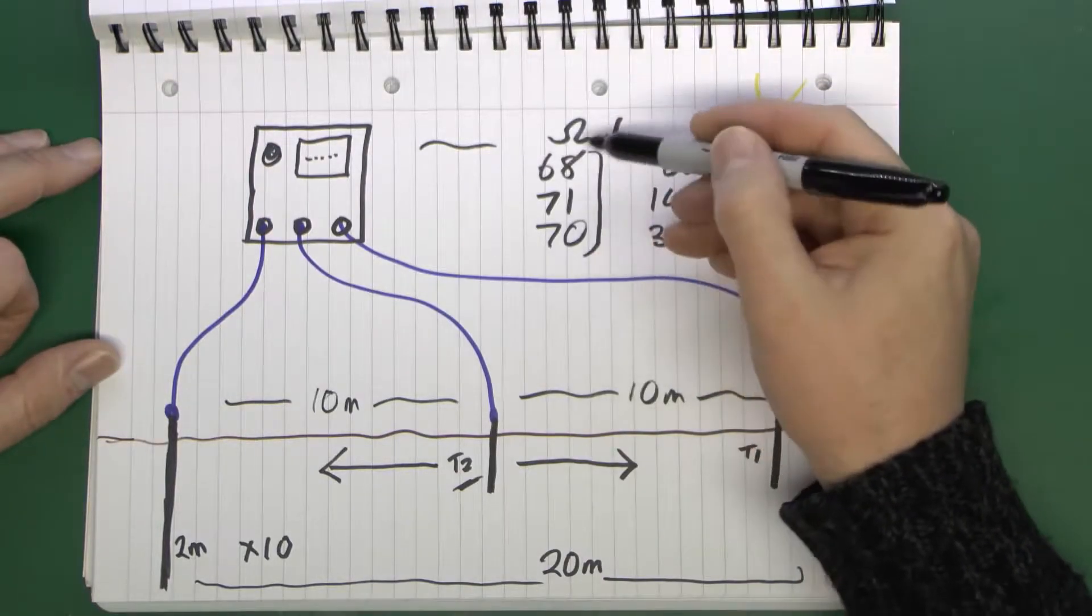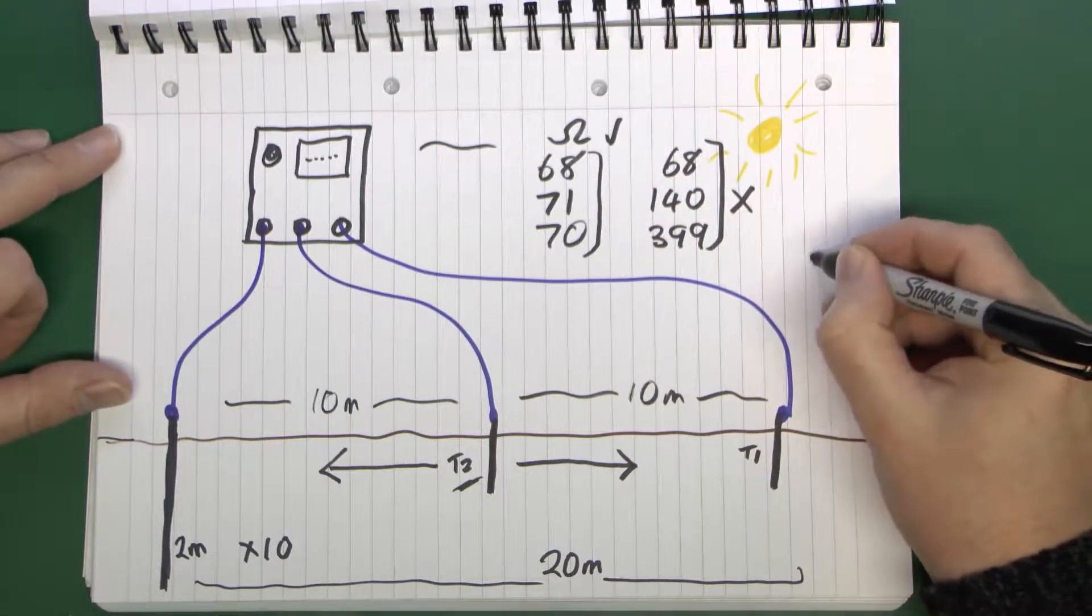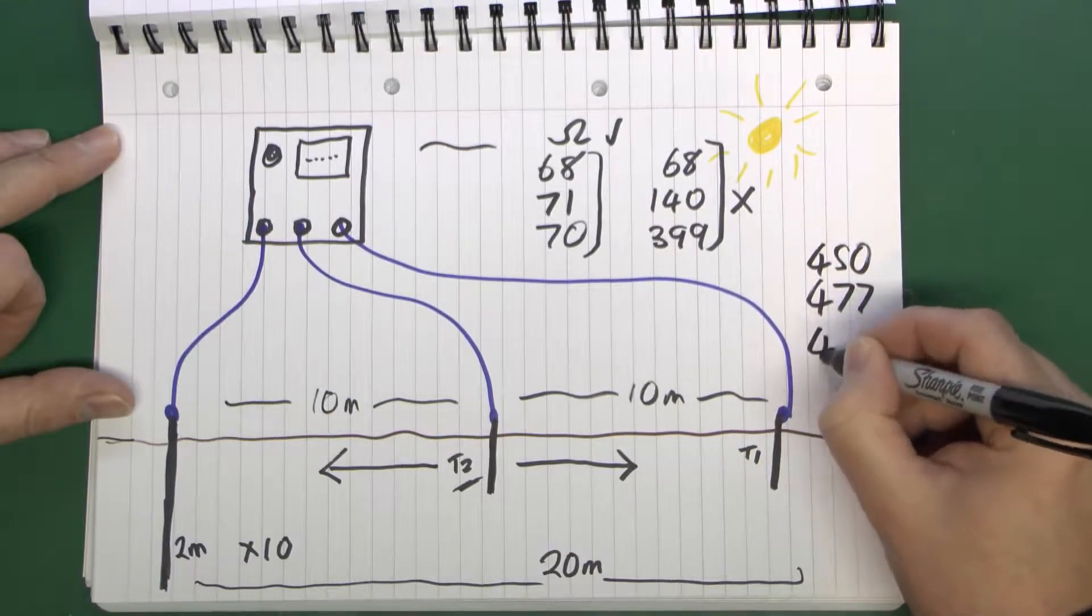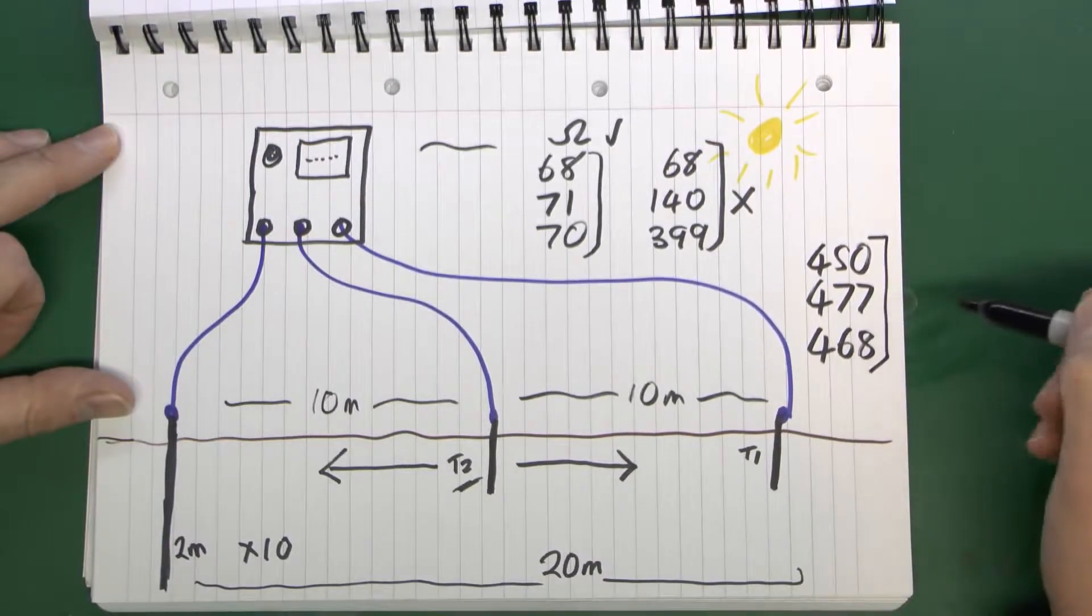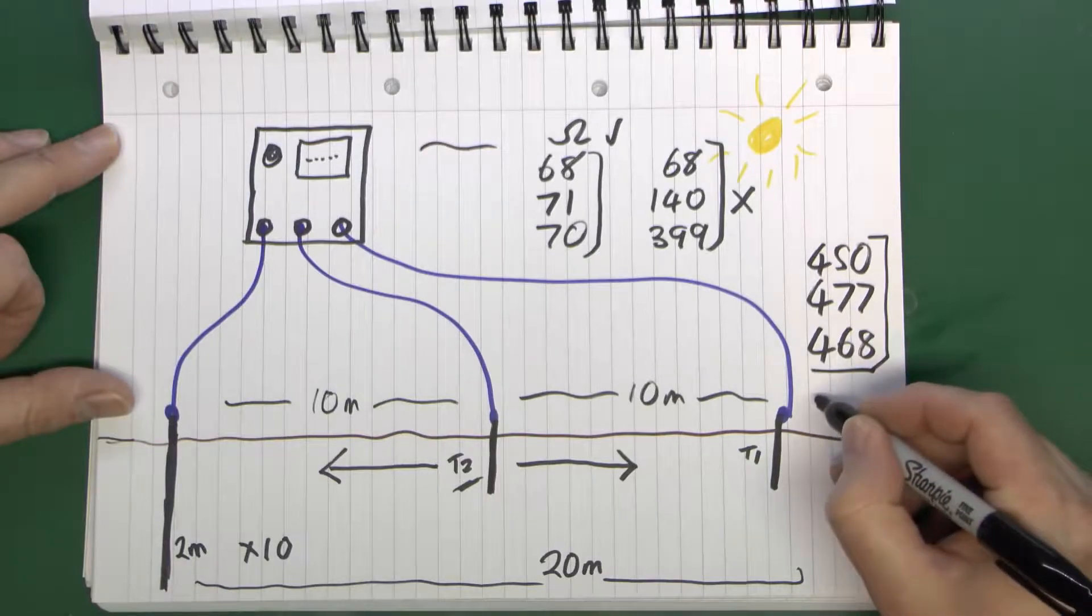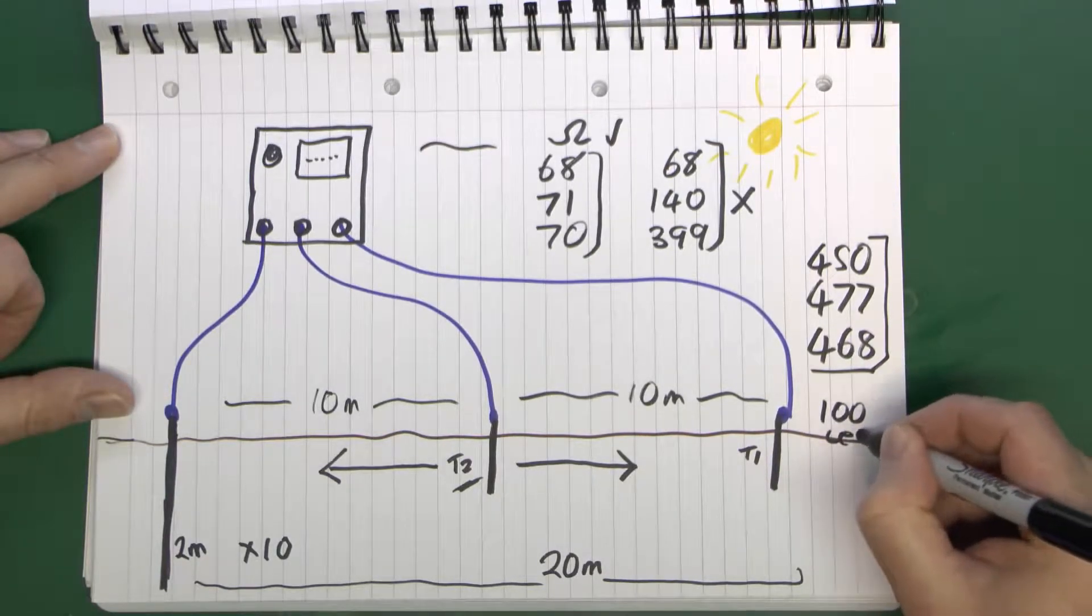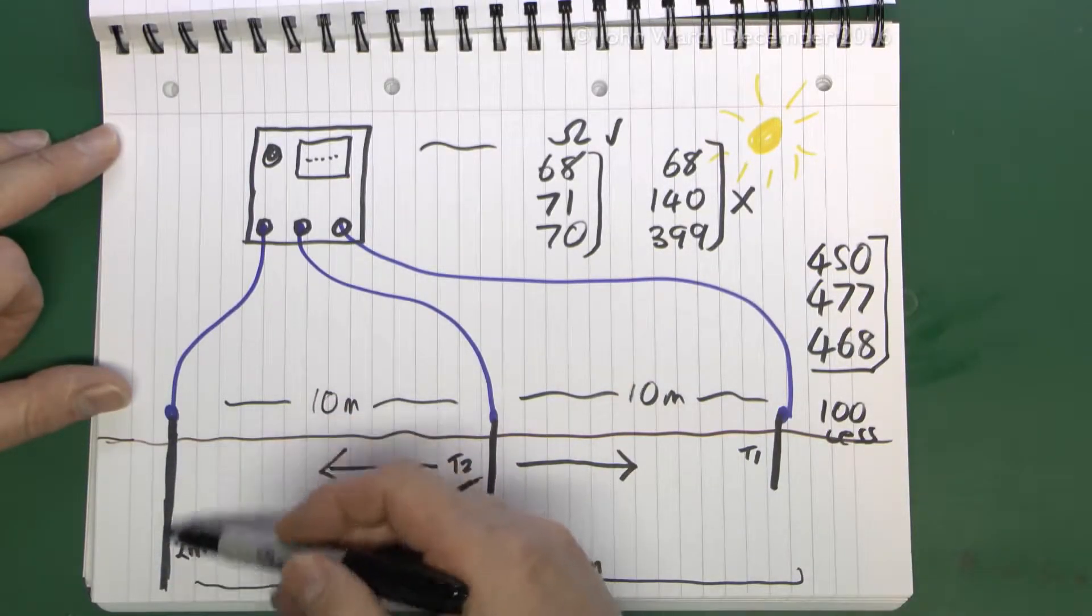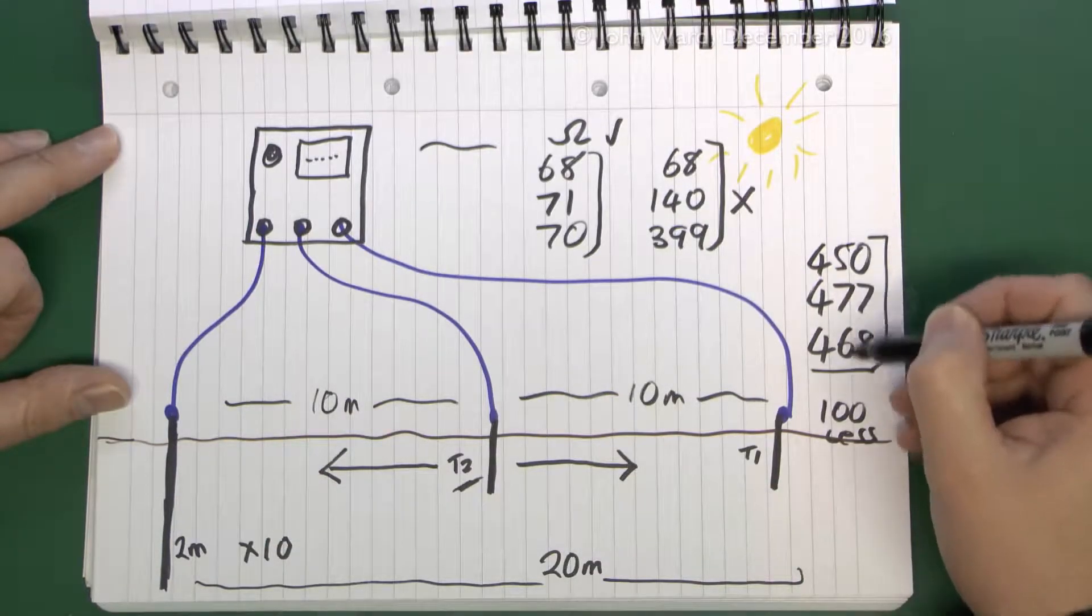Now a final point here: if you get three that are the same but they're all far too high, so say for example you've got three readings that came out as 450, 477, and 468, well yes they're all reasonably close together, but the average of those is in the middle of the 400s range. That is far too high because what you want to find is something in the range of 100 or less. This means that the actual electrode itself which you put in here is not sufficient, so you're going to have to do something about it to reduce this value considerably.